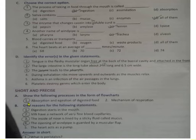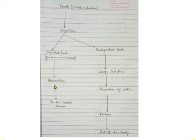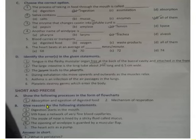Now, short and precise, question A1: show the following process in the form of a flowchart — absorption and ejection of digested food. Food in the small intestine undergoes digestion. After digestion, food is categorized into digested food — like glucose, amino acids, fatty acids — which are absorbed by the villi in the small intestine and mixed into the bloodstream. Undigested food goes to the large intestine, where water is absorbed, then it moves to the rectum and is stored as faeces, which is thrown out of the body at regular intervals.